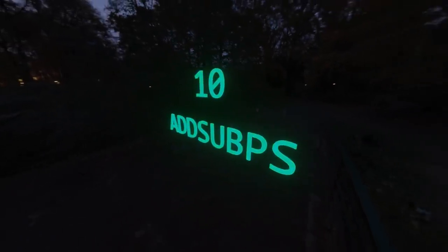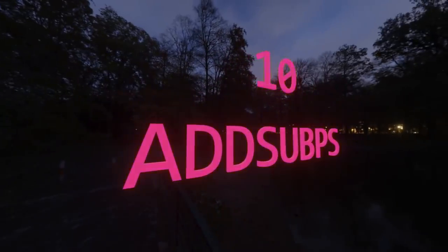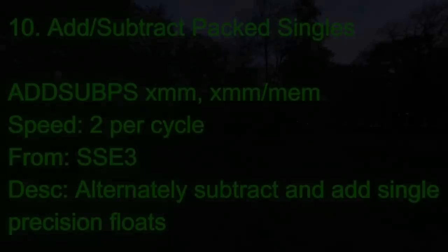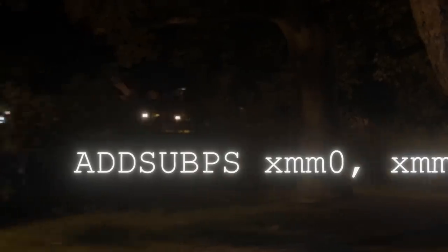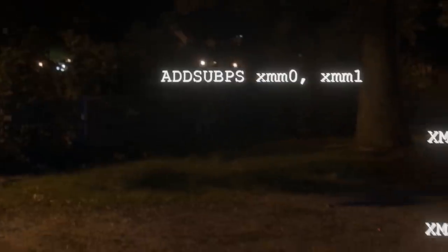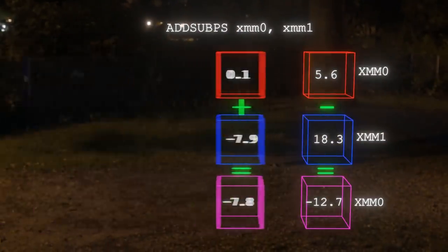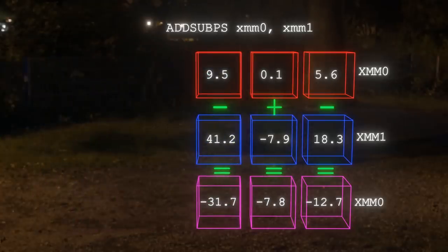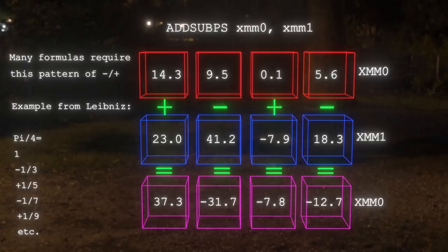Did you ever want to add or subtract? Why not do both? Number 10: ADDSUBPS. The instruction takes two floating point vectors as input and, in a confusing display of inappropriate naming, it actually subtracts even-numbered elements and adds odd-numbered elements. The instruction is meant to be generally useful because there are a lot of formulas that require you to add and subtract alternately like this. That's not very complicated, but we are just getting started.